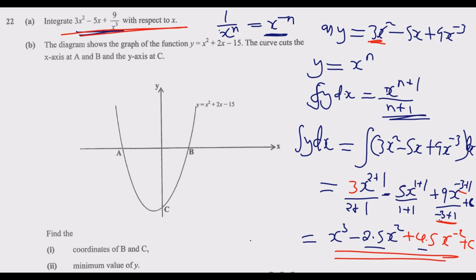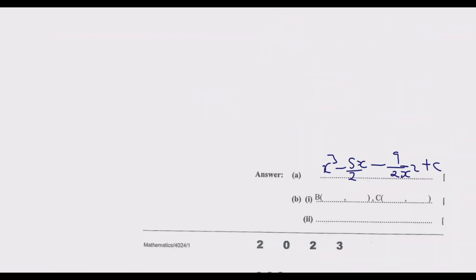Question 22b: the diagram shows the graph of the function y = x² + 2x − 15. The curve cuts the x-axis at points A and B, and the y-axis at point C. We need to find the coordinates of B and C. At point B, the value of y is 0 because B lies on the x-axis. So we set the function equal to 0 and solve the quadratic equation x² + 2x − 15 = 0.